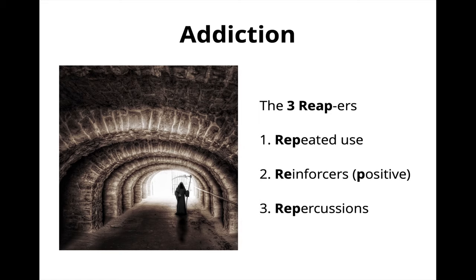These 11 criteria are a lot to remember, and frankly you can recognize the overall pattern of addiction using just three things, which we'll refer to as the three reapers. Addiction is when a patient engages in repeated use — not just once but ongoing — of specific reinforcers, particularly positive reinforcers that feel good and make someone want to keep using them, all in spite of clear repercussions such as worsening health, alienating family and friends, and losing one's job. You can use the 11 DSM criteria to be more thorough, but in actual clinical practice you can diagnose cases of addiction just by using the three reapers.